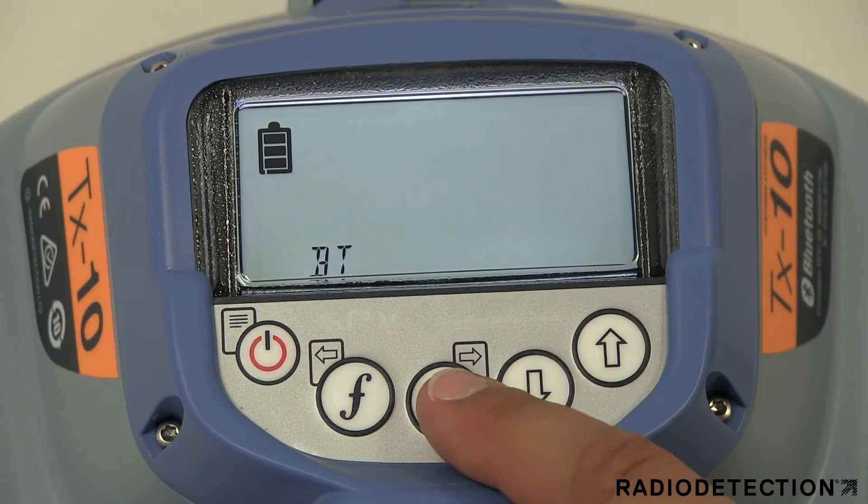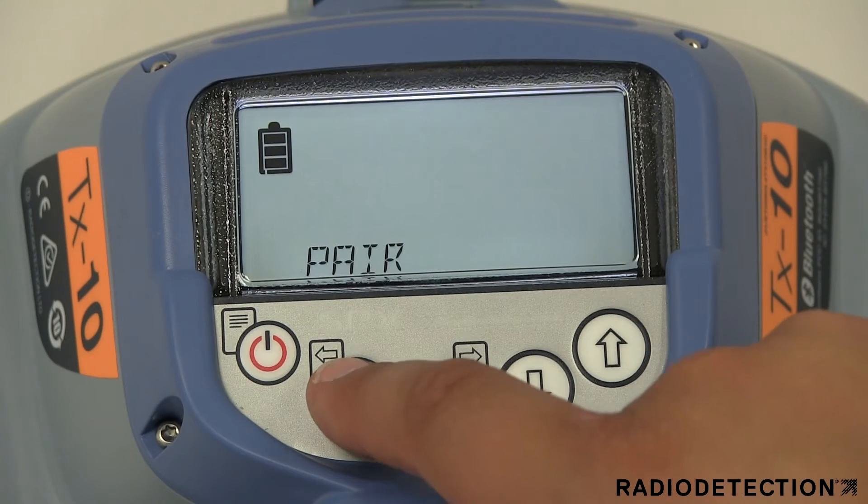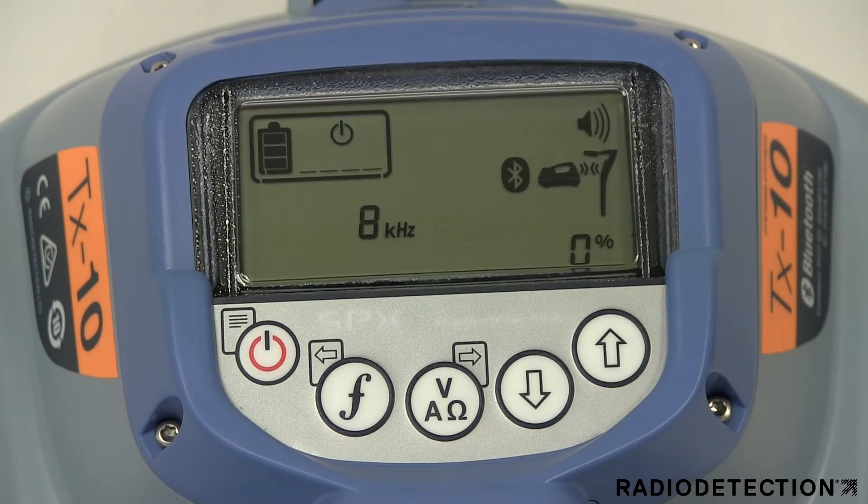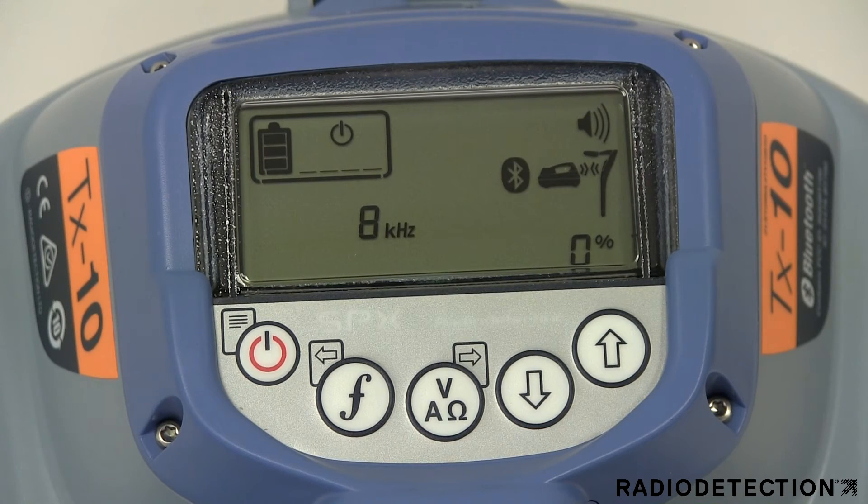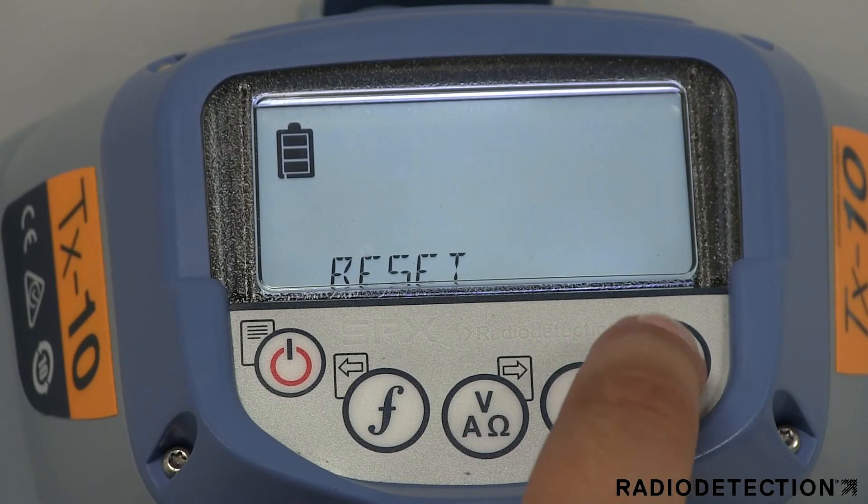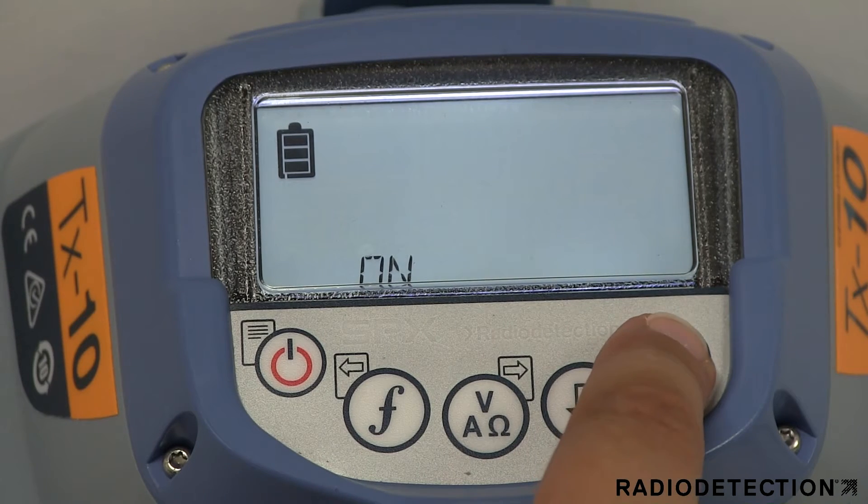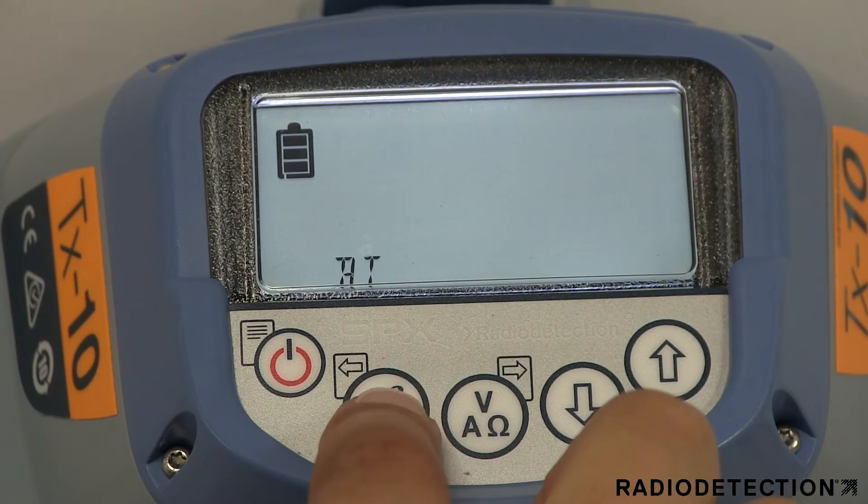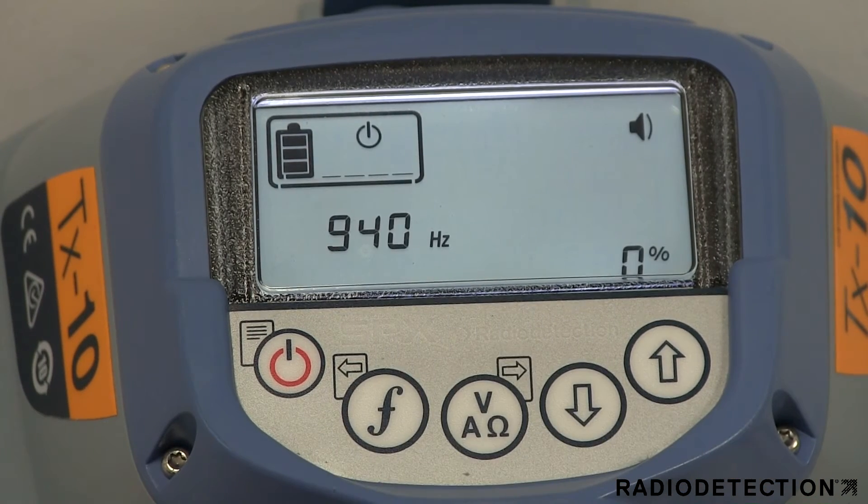To pair your transmitter with your locator, scroll to the pair option and use the F key to start the pairing process. You will only need to pair with your locator once, and when the pairing is complete, a pairing icon will appear on the screen and the Bluetooth icon will stop flashing. The reset option will clear the current pairing between your transmitter and locator. The on and off options allow you to activate or deactivate the Bluetooth connection on the transmitter as you wish.